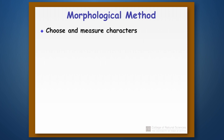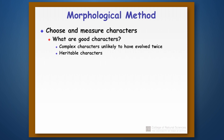The first thing we have to do is choose and measure our characters. What are good morphological features? As we suggested before, we want complex characters that are unlikely to have evolved twice. We also want characters that are heritable.